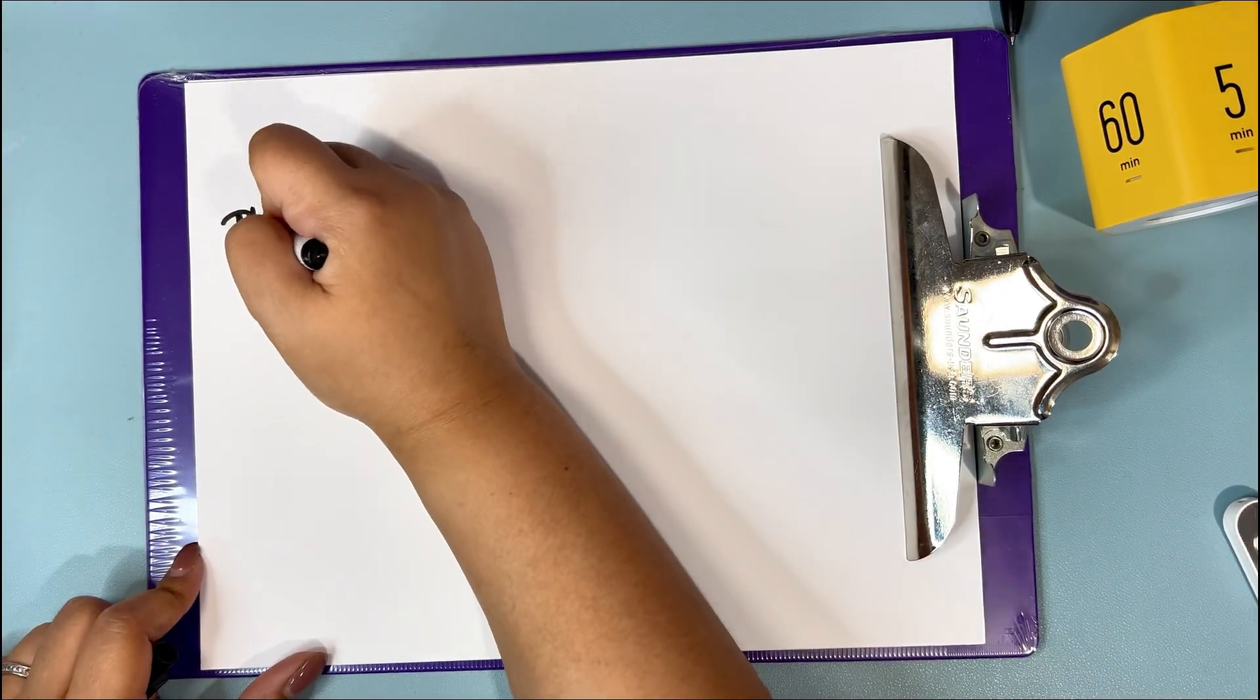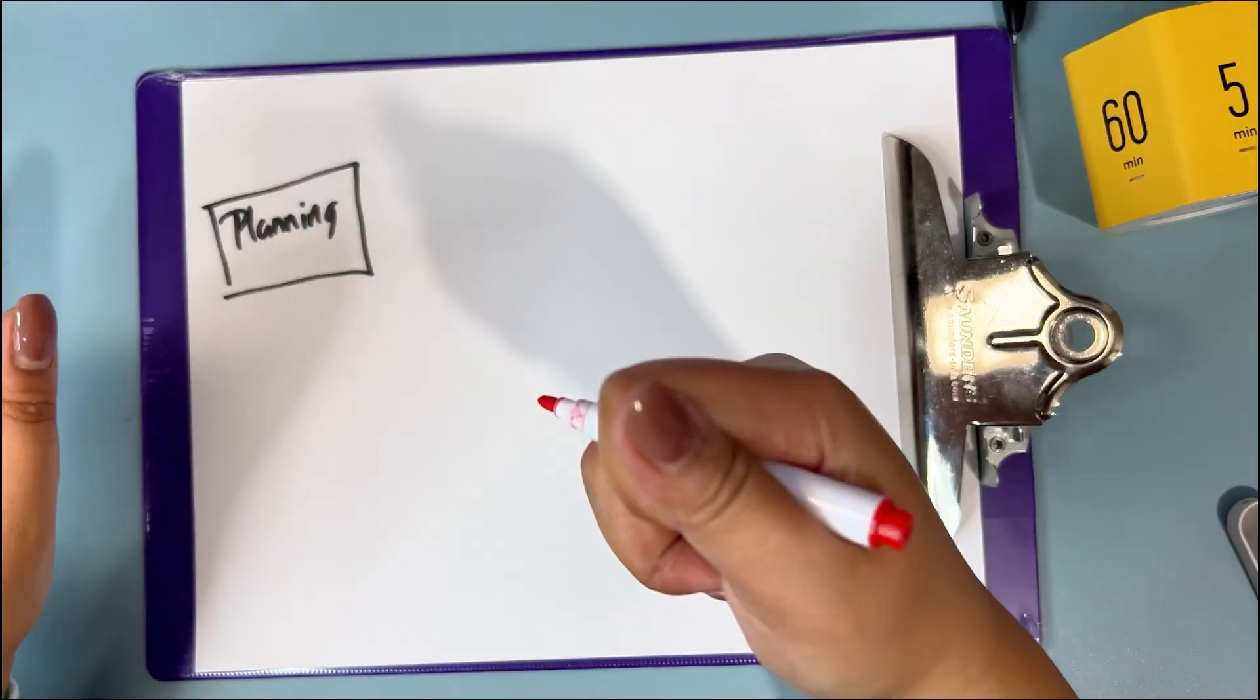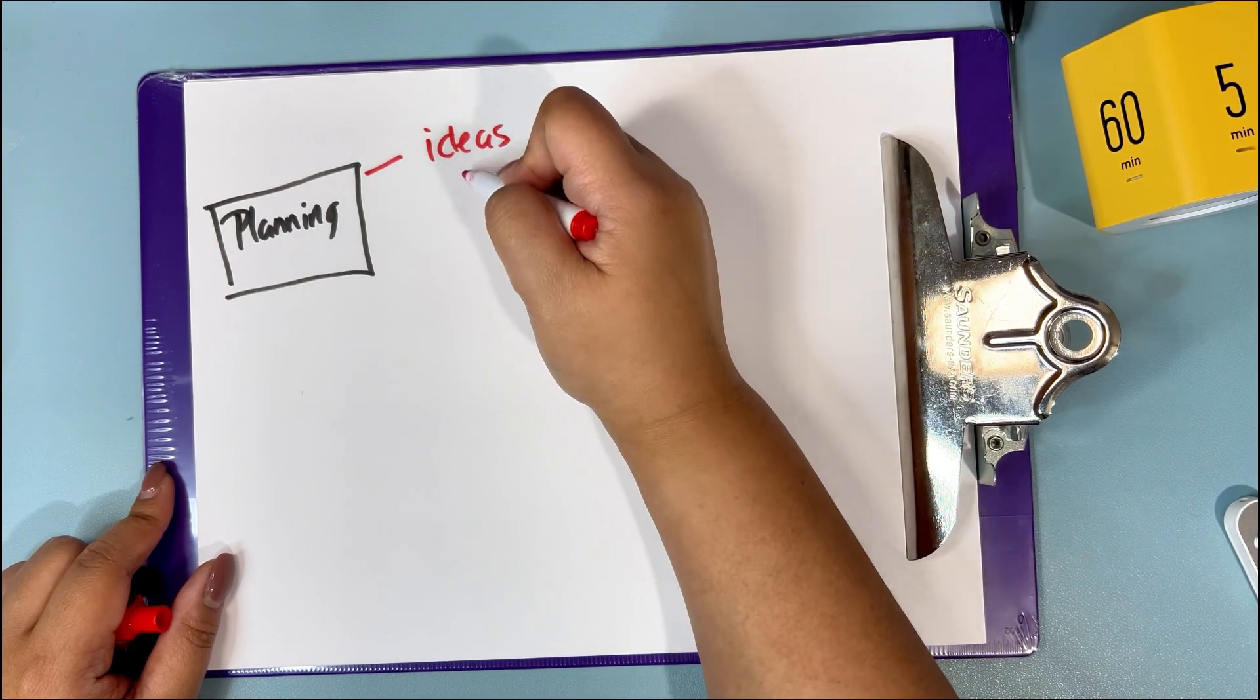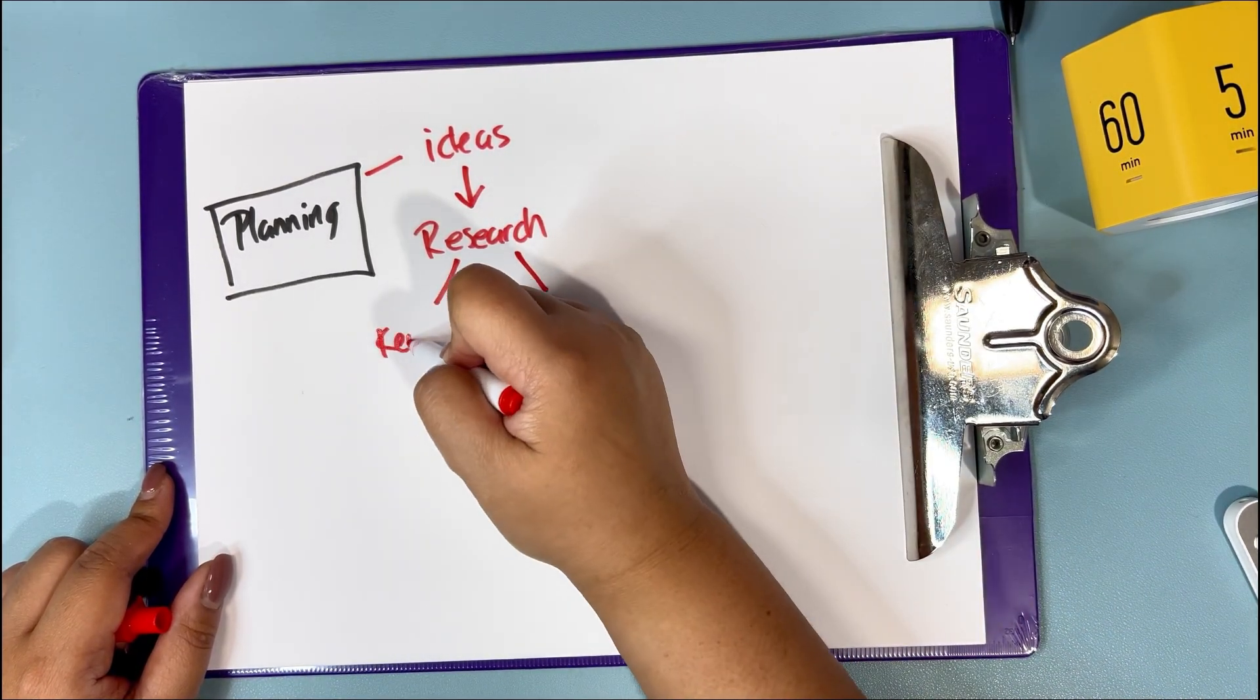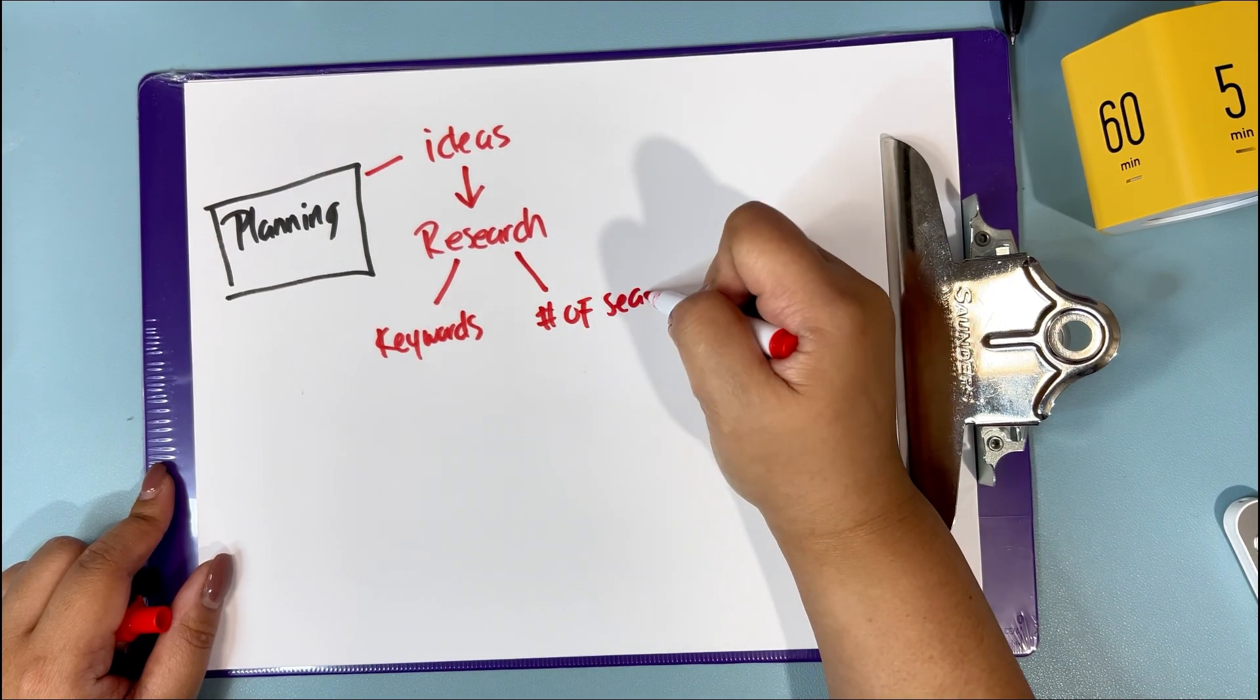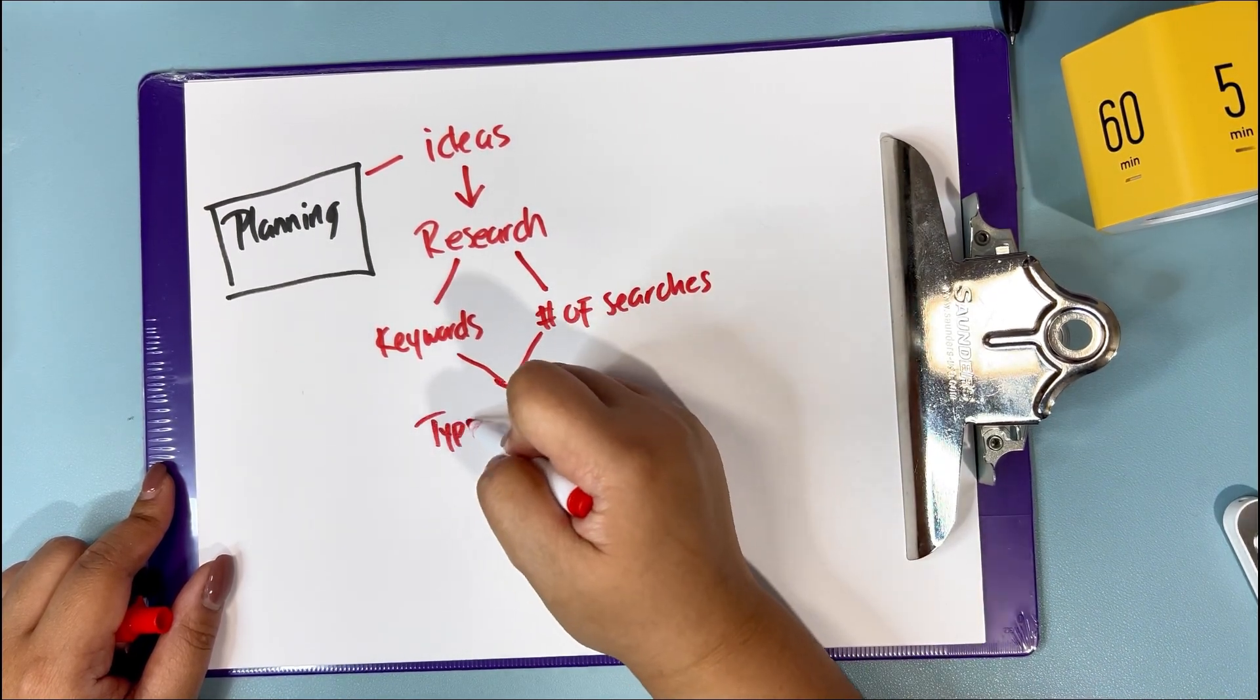Don't skip the planning phase. Otherwise, you'll spend too much time filming and editing. First, find an idea or topic by researching keywords and the number of searches for that keyword. Look for questions people are asking.